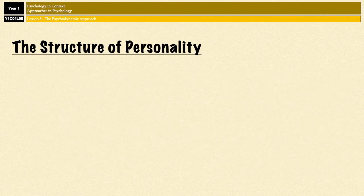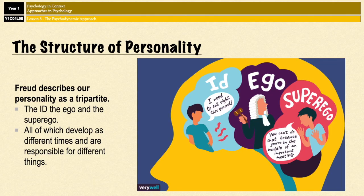Now let's have a look at the structure of personality. Freud describes our personality as tripartite, which means that it consists of three parts, and those parts are the id, the ego, and the superego, all of which develop at different times and are responsible for different things.